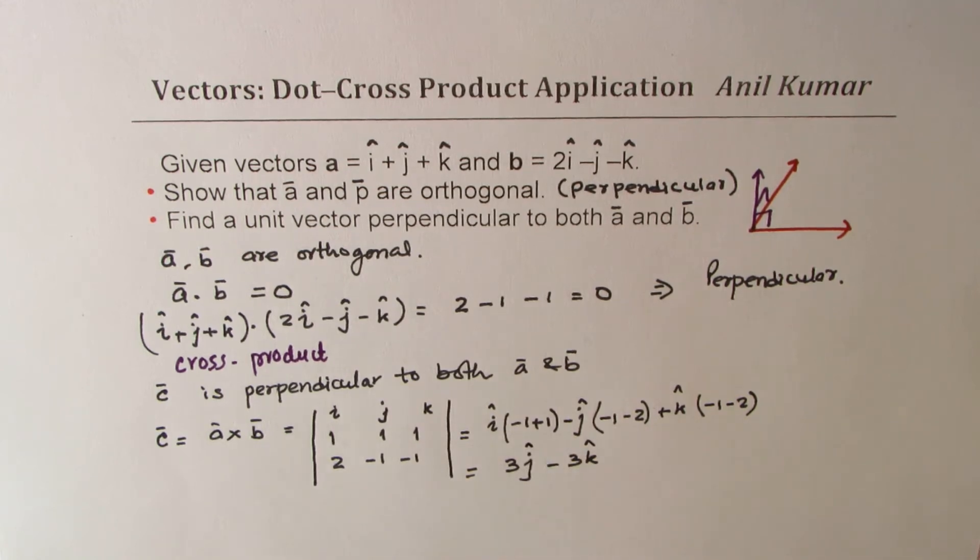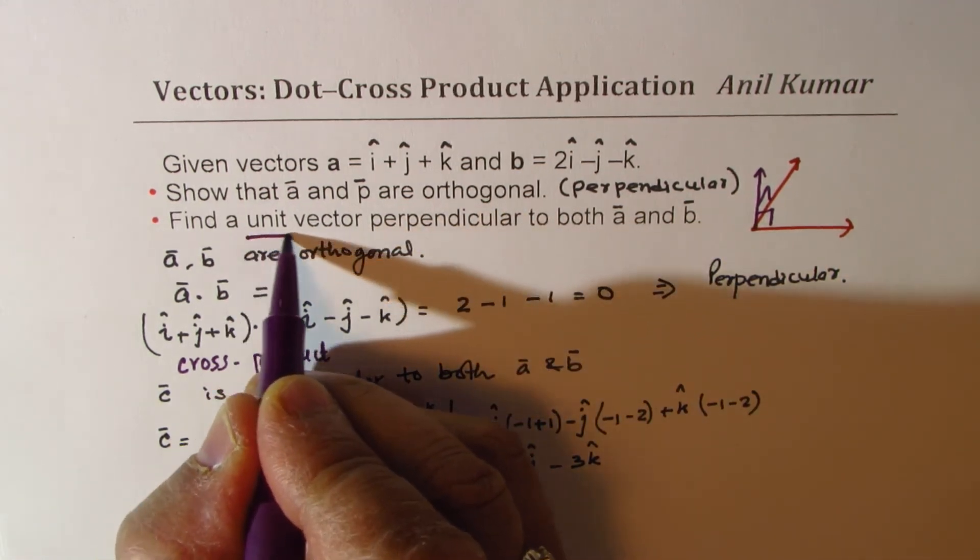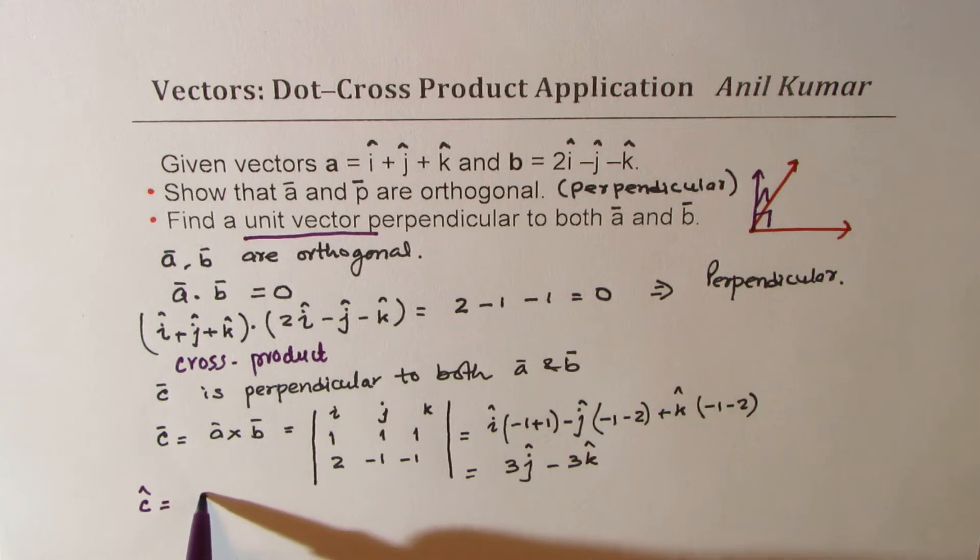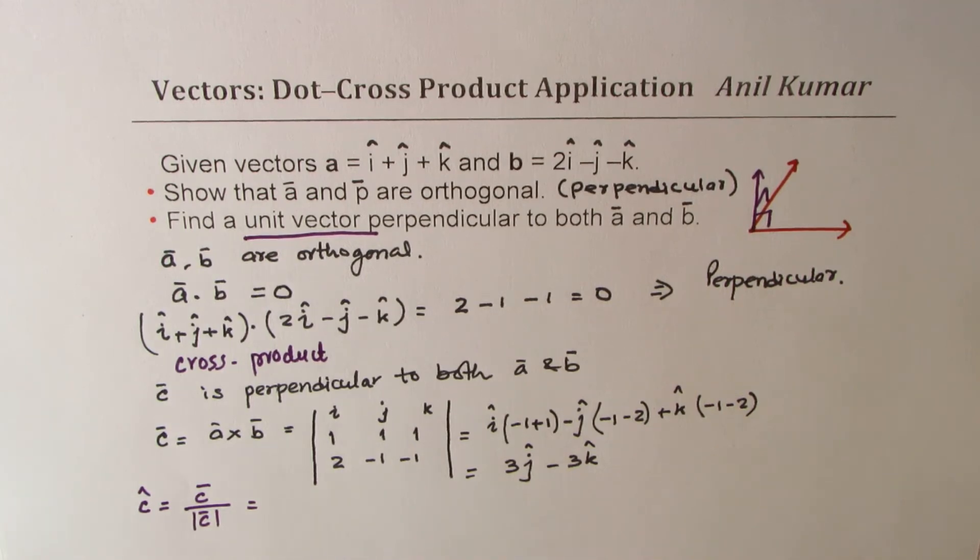So this vector is perpendicular to both, but what are we really interested in finding? We need to find unit vector. So unit vector will be the vector c divided by the magnitude of vector c. So we get the unit vector by dividing 3i plus 3j minus 3k.